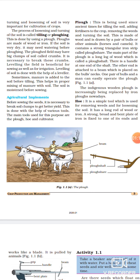Yeh organisms soil ki loosening mein aur uske turning mein kaise help karte hai - microbes jo hote hai, wo plants aur animals ko decompose karke nutrients provide karte hai. Soil ki loose aur turn hone ki baat hai, toh is process ko hum tilling ya phir plowing bolte hai. Is process ko plow ki help se kiya jata hai.